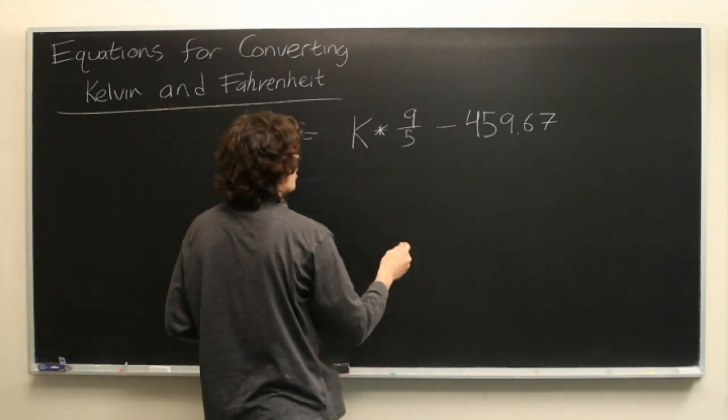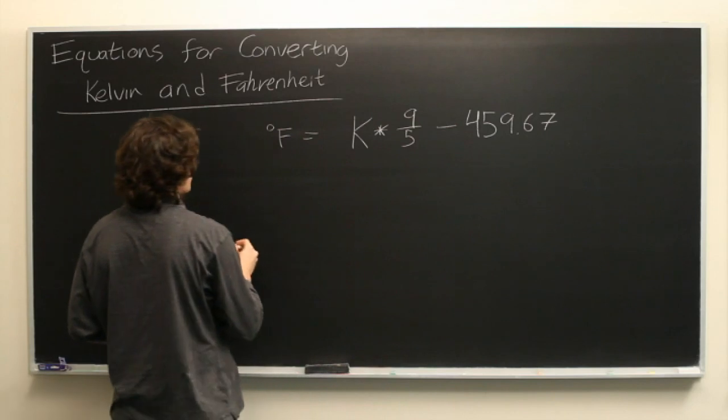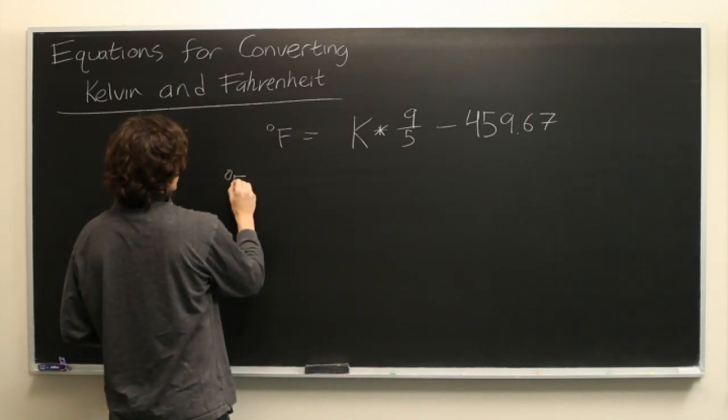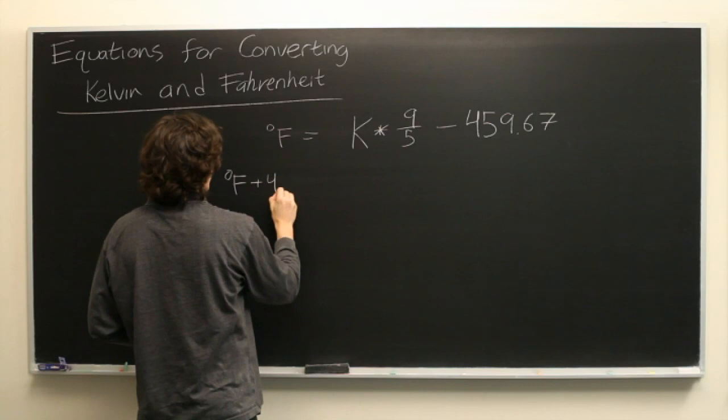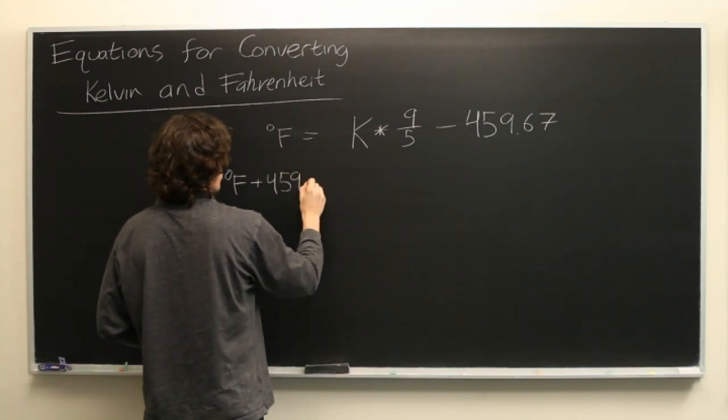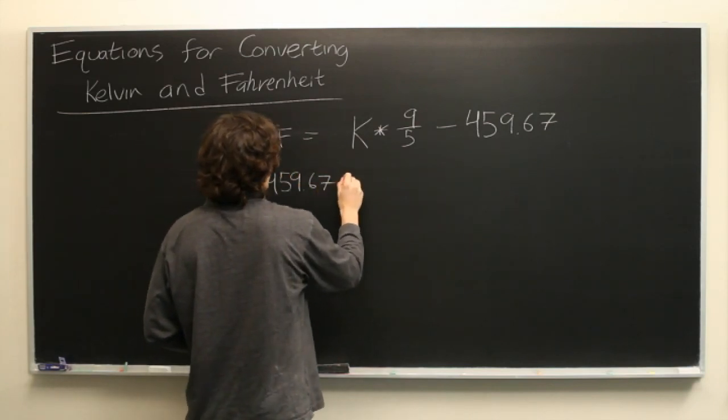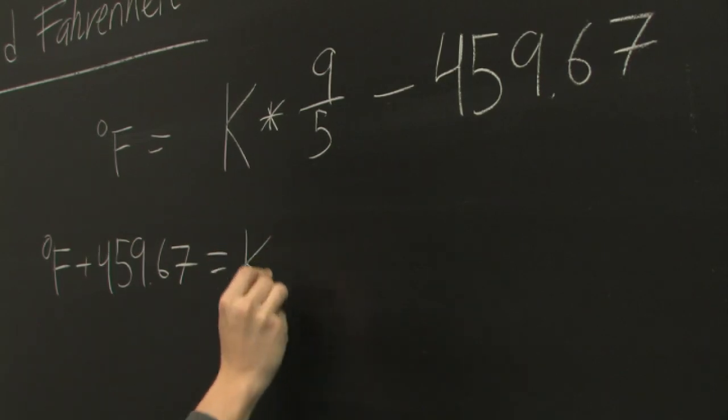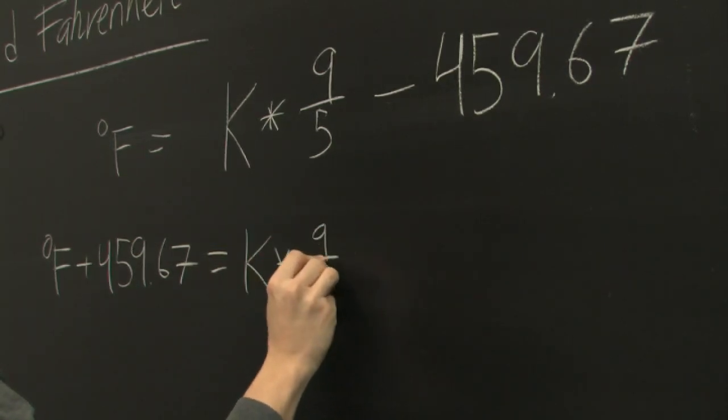we'll first add 459.67 to both sides of the equation. Fahrenheit plus 459.67 equals Kelvin times 9 over 5.